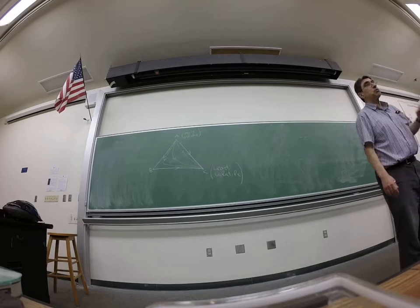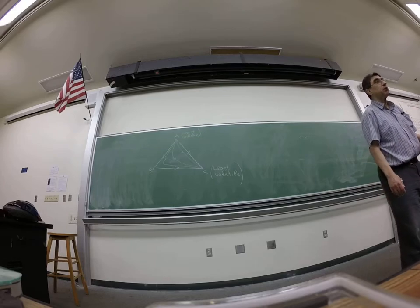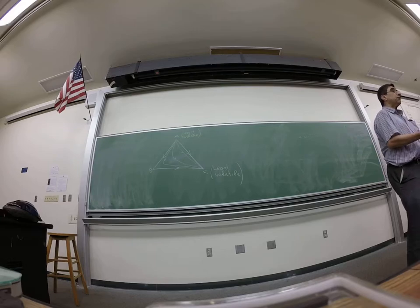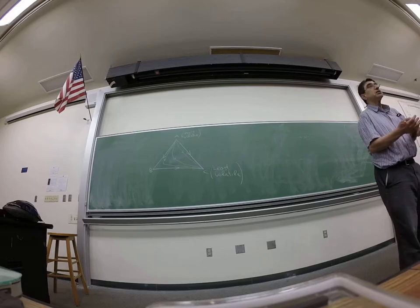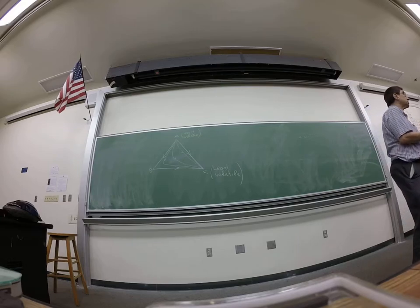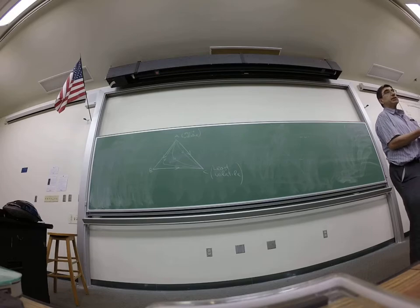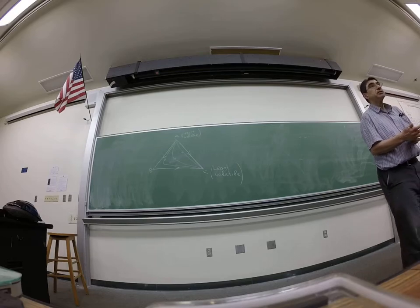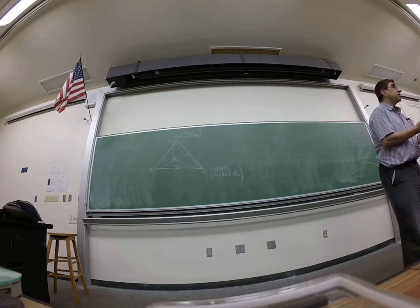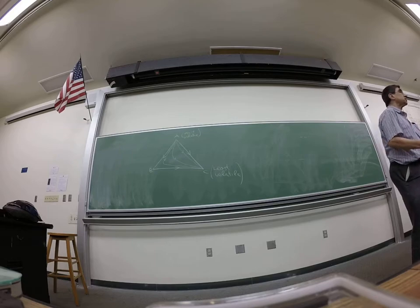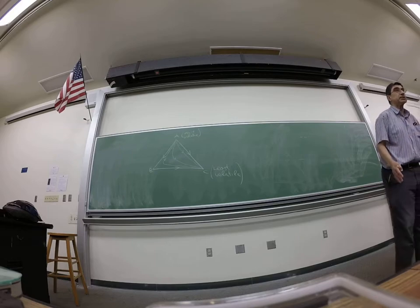And the second most important principle is that feed, distillate, and bottoms must be in a straight line. This is simply total and species material balances.